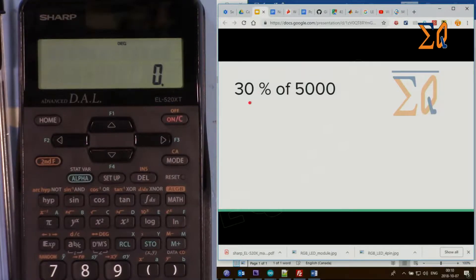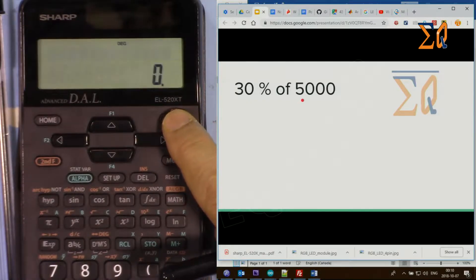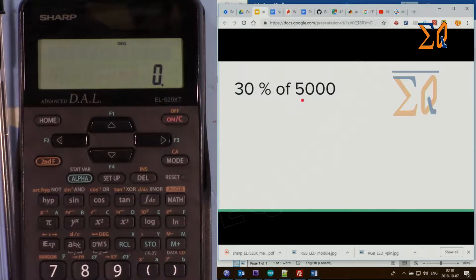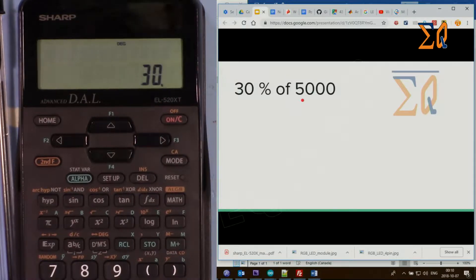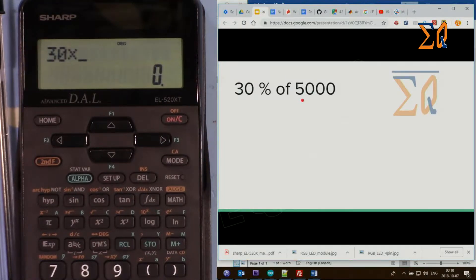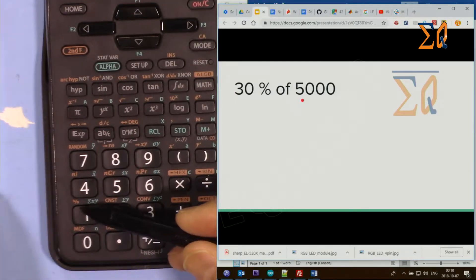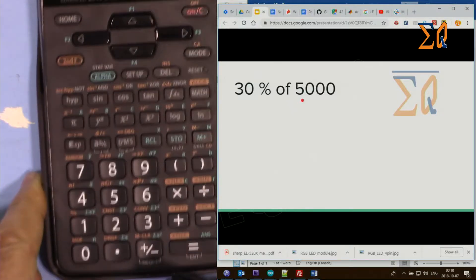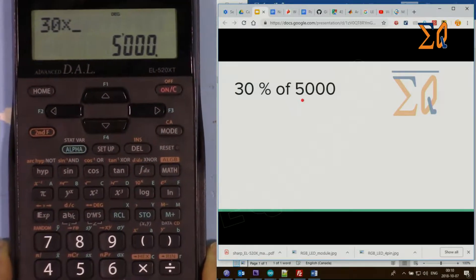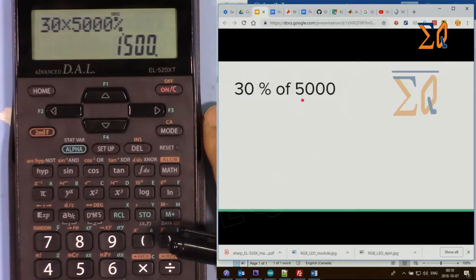Let's say you want to find out 30% of 5,000. You can do it two ways. You can do 30 times 5,000, and then for the percent you press second function and then one. From now on I'm just going to mention it as second function one. This is how it's done and the answer is 1,500.